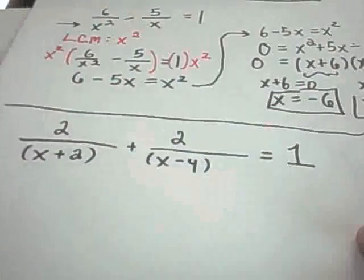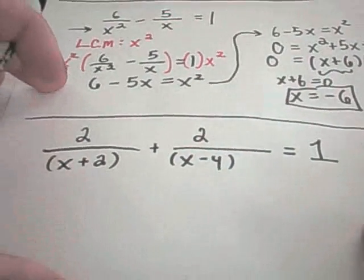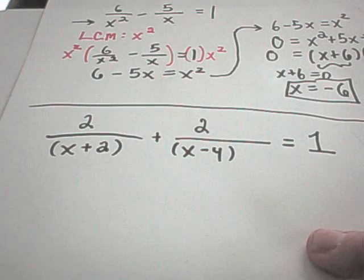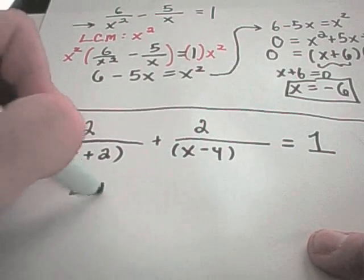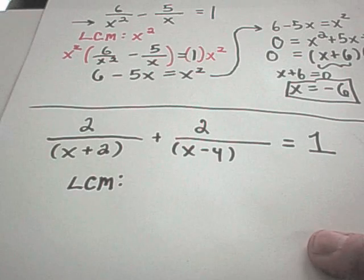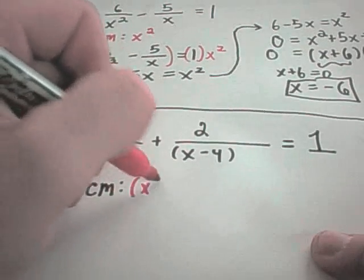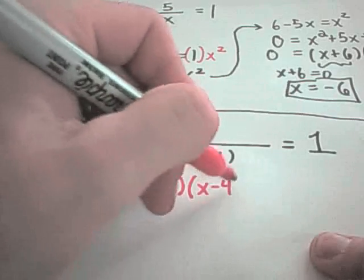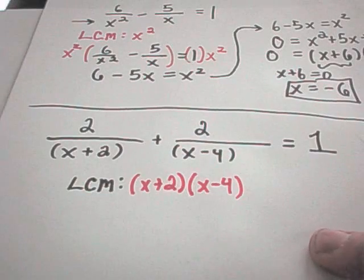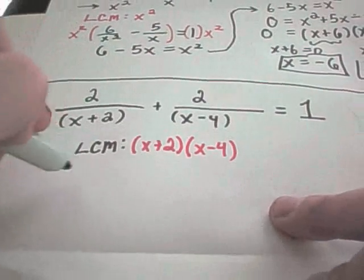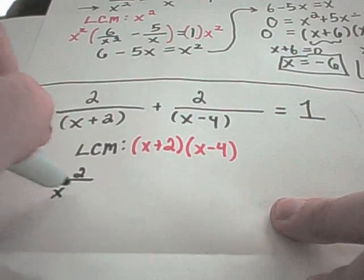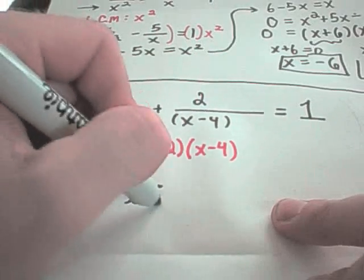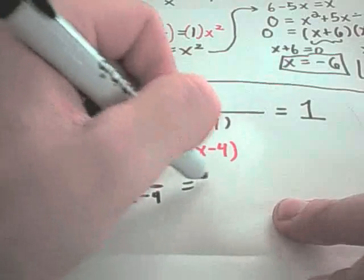Here's our next example. 2 over x plus 2 plus 2 over x minus 4 equals 1. In this case, our least common multiple is going to be x plus 2 times x minus 4. So I'm going to multiply both sides of the equation by that.